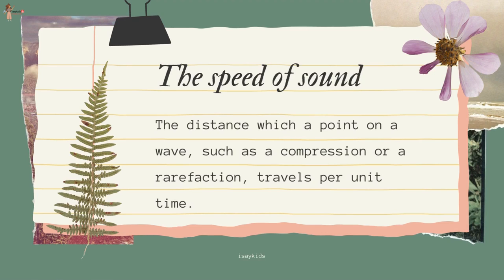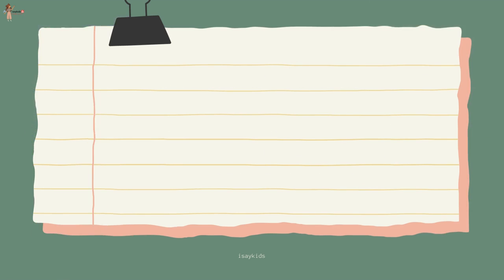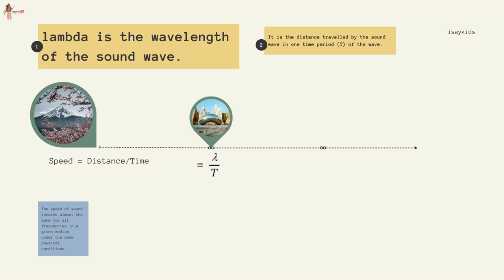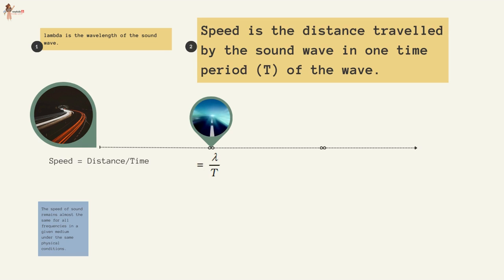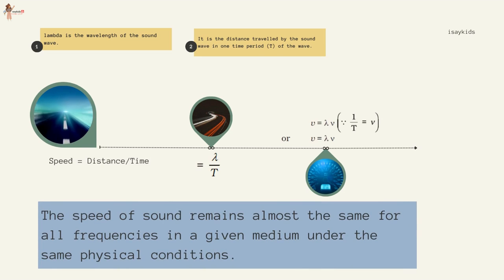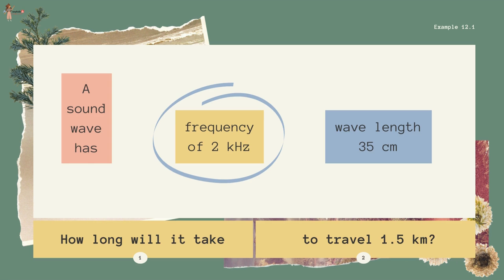The speed of sound is defined as the distance which a point on a wave — such as a compression or rarefaction — travels per unit time. Speed = distance / time = λ/T, where λ is the wavelength of the sound wave, i.e., the distance traveled by the sound wave in one time period. Thus speed = λ × ν (frequency). The speed of sound remains almost the same for all frequencies in a given medium under the same physical conditions.